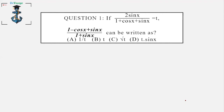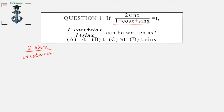What we'll do is rationalize this denominator. If you have anything else in mind, you can pause the video and go ahead with it and see if it matches any of the options. We're going to solve it by rationalizing, so let's write 2sinx / (1 + cosx + sinx) = t.